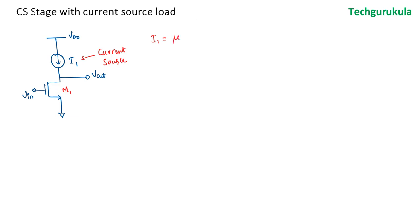I1 should be equal to mu C aux W by L times Vgs minus Vth whole square over 2. So we have to choose the DC Vgs voltage in such a way that the MOSFET allows I1 current to flow through it.